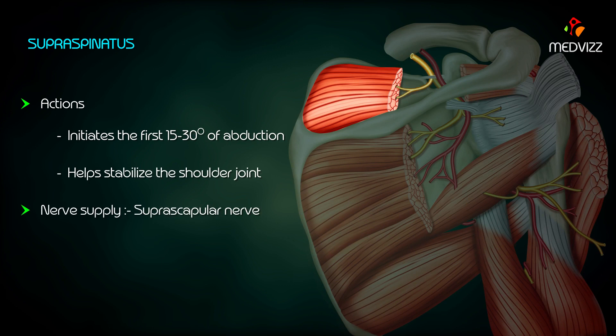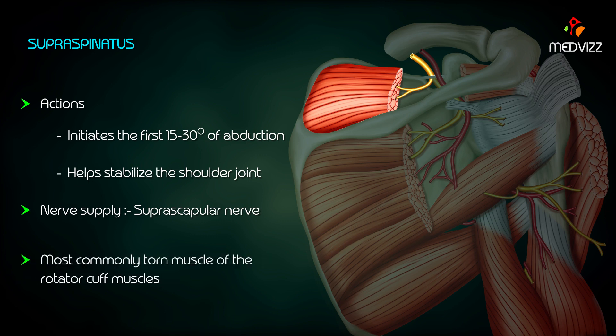Nerve supply is by the suprascapular nerve. An important point to note is that the supraspinatus is the most commonly torn muscle of the rotator cuff muscles.